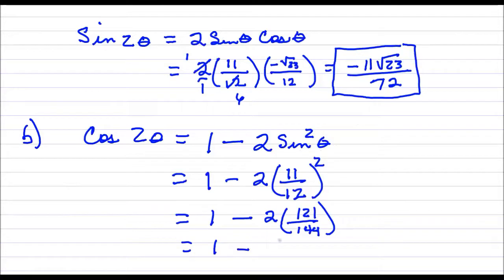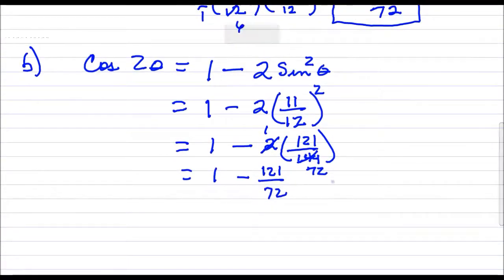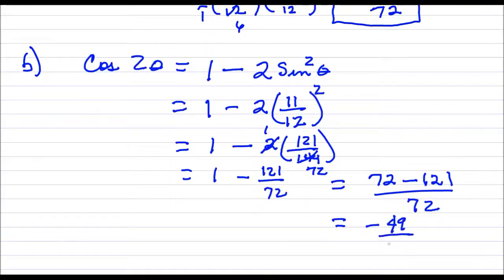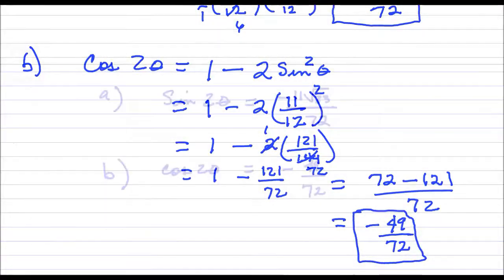So this is 1 minus 2 times 121 over 144. This 2 will simplify with this 144. That will give us 1 minus 121 over 72, which is the same thing as 72 minus 121 over 72. 72 minus 121, that is negative 49. Write that all over 72. And that would be your answer.